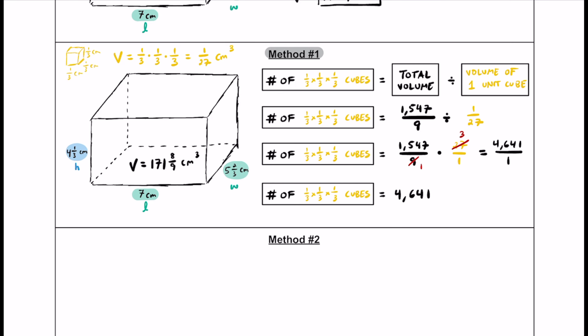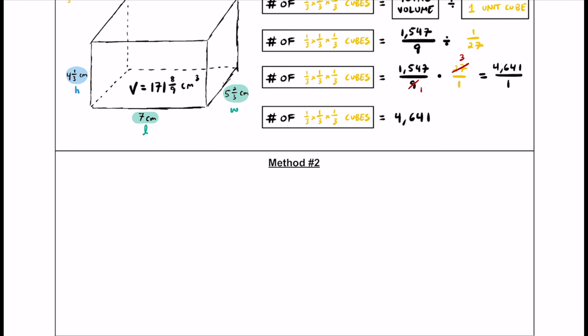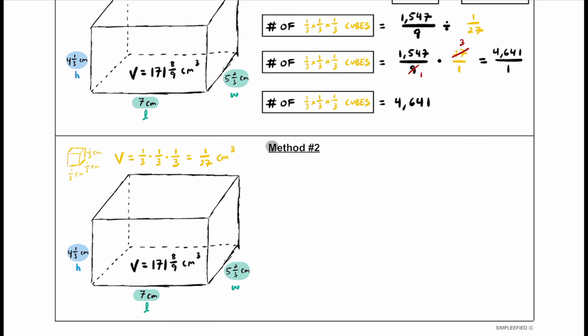That's Method 1. For Method 2, instead of dividing the two volumes, we'll figure out how many unit cubes fit along the length, how many fit along the width, and how many fit along the height. Then we multiply those three numbers together to get the total number of cubes.